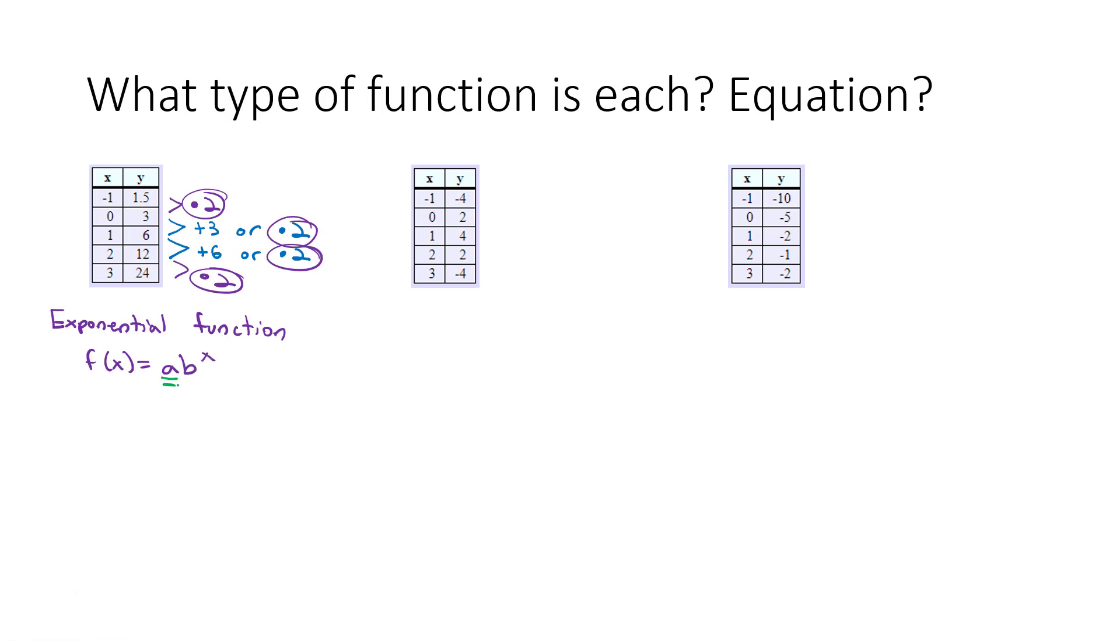Well, a is the starting value at zero, which means a must be three. And b is what we're multiplying by, which playing with our table, we found out we're multiplying by two. So this graph must be f(x) = 3(2^x).